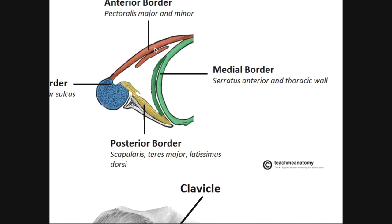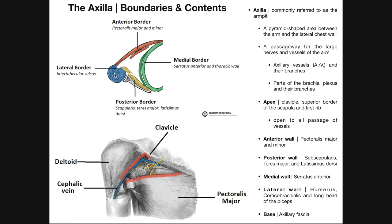Also note that the pectoralis major inserts on the lateral lip of the intertubercular groove. The lateral border is really composed of the humerus, coracobrachialis, and the long head of the biceps brachii — it's really going to be the intertubercular groove. Because the long head of the biceps brachii sits in that groove, we consider it part of the lateral wall. There's also a little bit of coracobrachialis, which inserts on the coracoid process in this area. So depending on what level of cross section you're looking at, you might see teres major and latissimus dorsi or coracobrachialis composing the lateral wall.